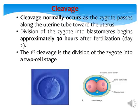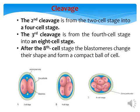The zygote divides into blastomeres beginning approximately 30 hours after fertilization — that is, by day 2. The first cleavage division gives us 2 cells, then 4 cells, then 8 cells. After the 8-cell stage, the blastomeres change their shape and form a compact ball of cells.